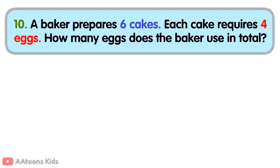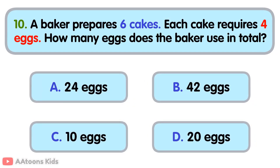A baker prepares six cakes. Each cake requires four eggs. How many eggs does the baker use in total?